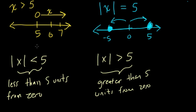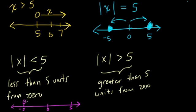You can almost imagine what these graphs will look like. With the absolute value of x less than 5, if I draw a simple number line here with 0 marked, every number that's less than 5 units from 0 ranges from negative 5 all the way up to 5. So we have two open circles here, and x can be anything in between, because all of those numbers are less than 5 units from 0.